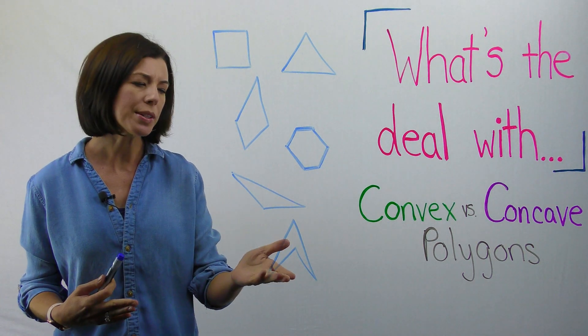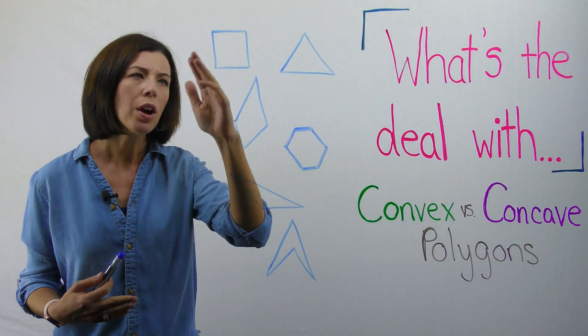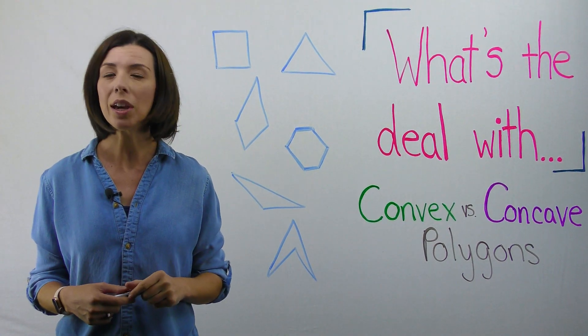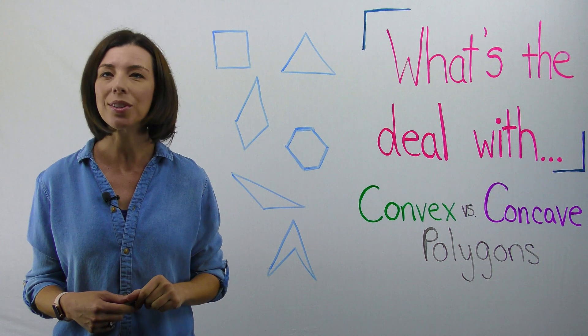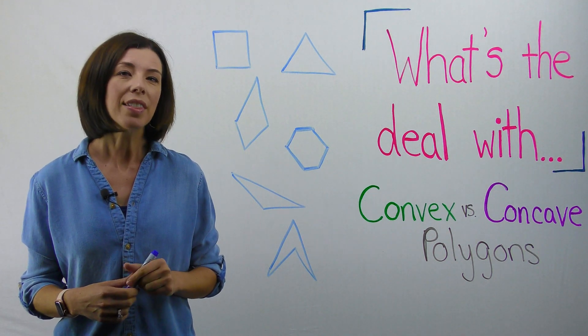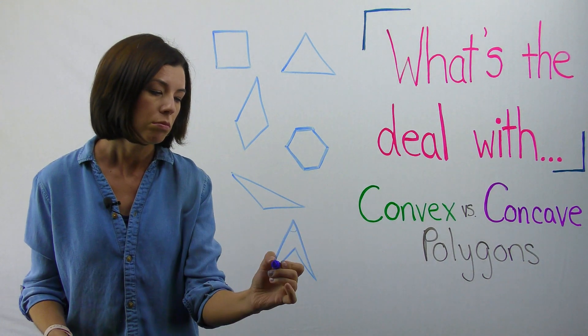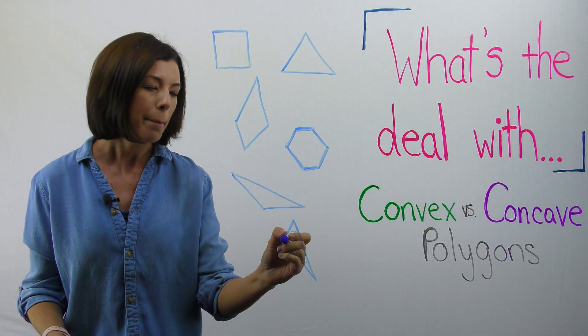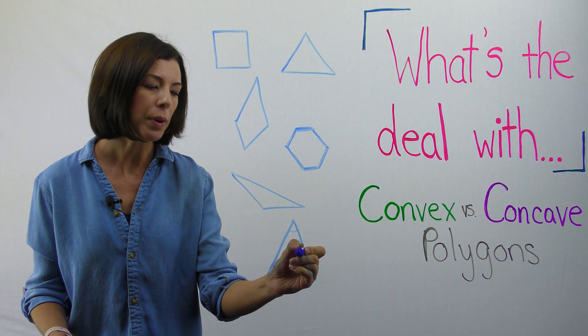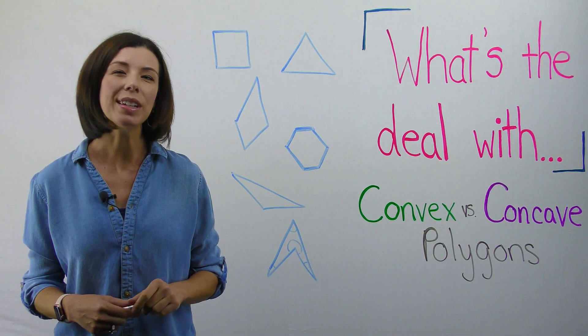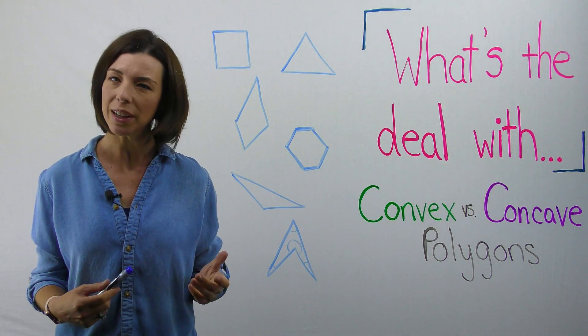What do you notice that's different about this shape versus these other shapes? And I'll give you a hint. It has to do with the angles on the inside. Maybe you're noticing that the angles on this shape all look acute. But what about this angle right here?